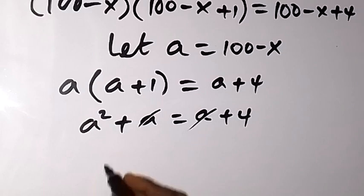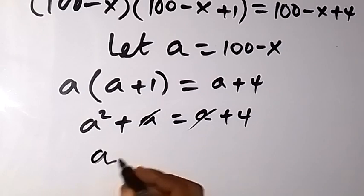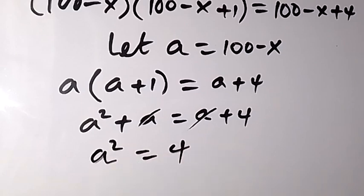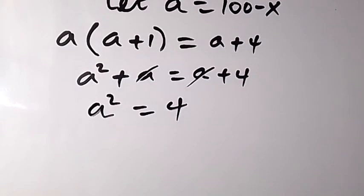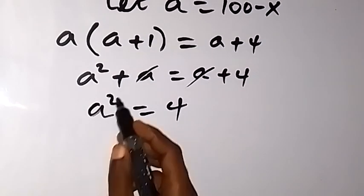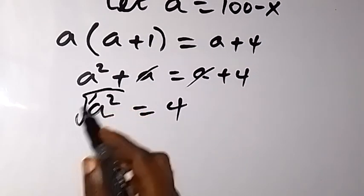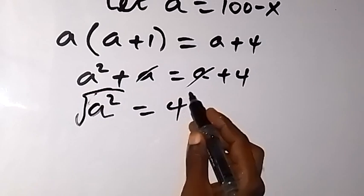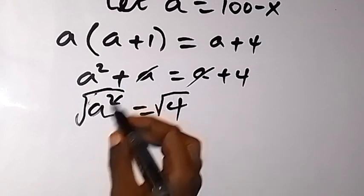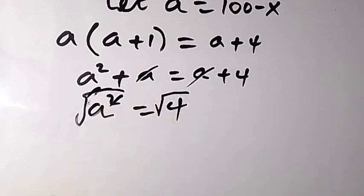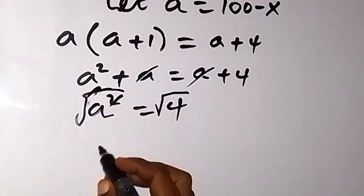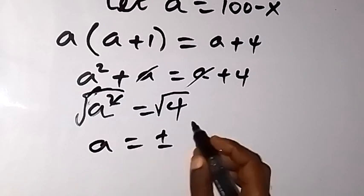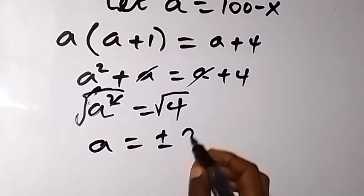In the next step we have a squared equals 4. We are finding a, so we take the square root on both sides. The square and square root cancel, giving us a equals plus or minus the square root of 4, which is 2.